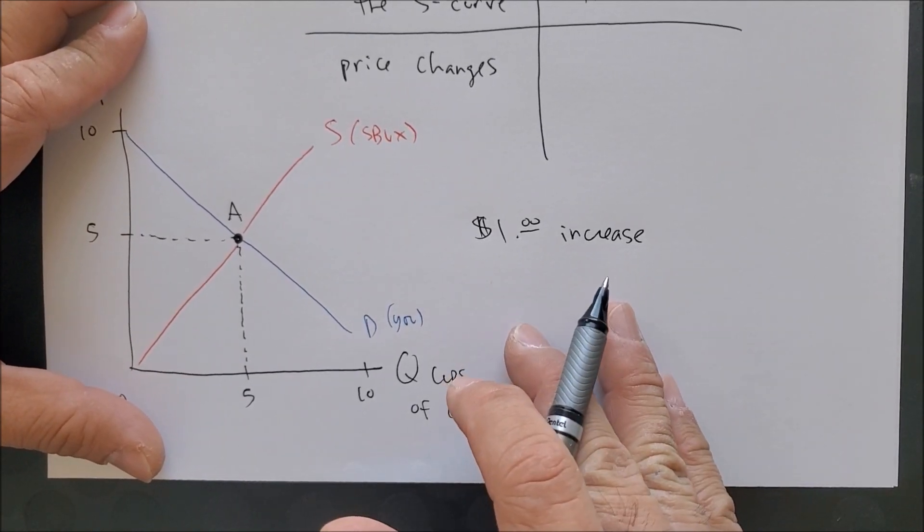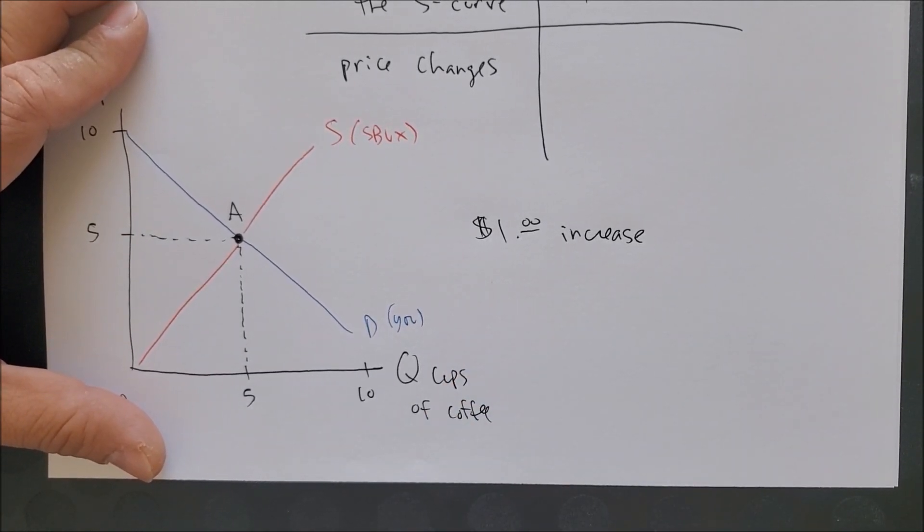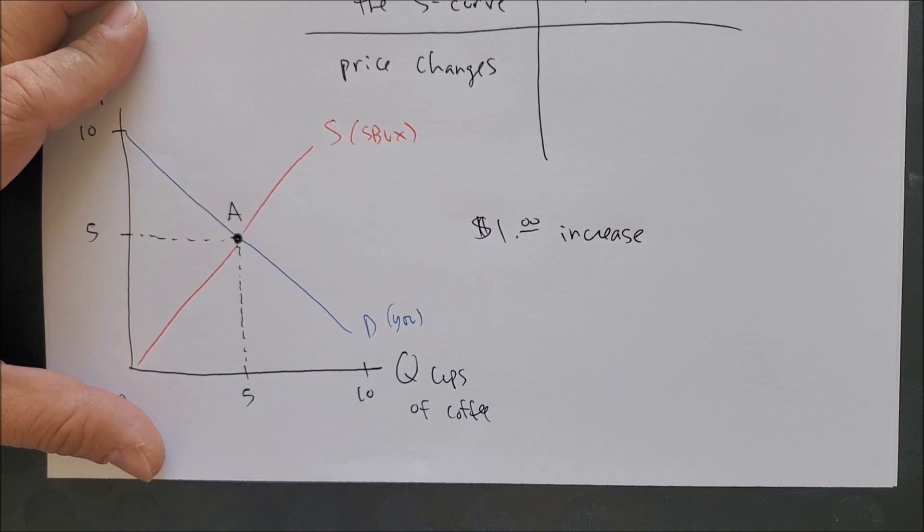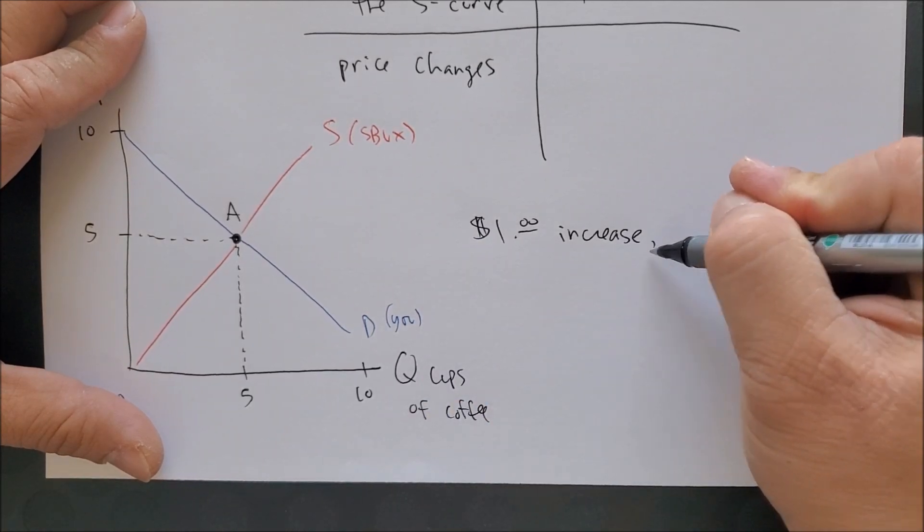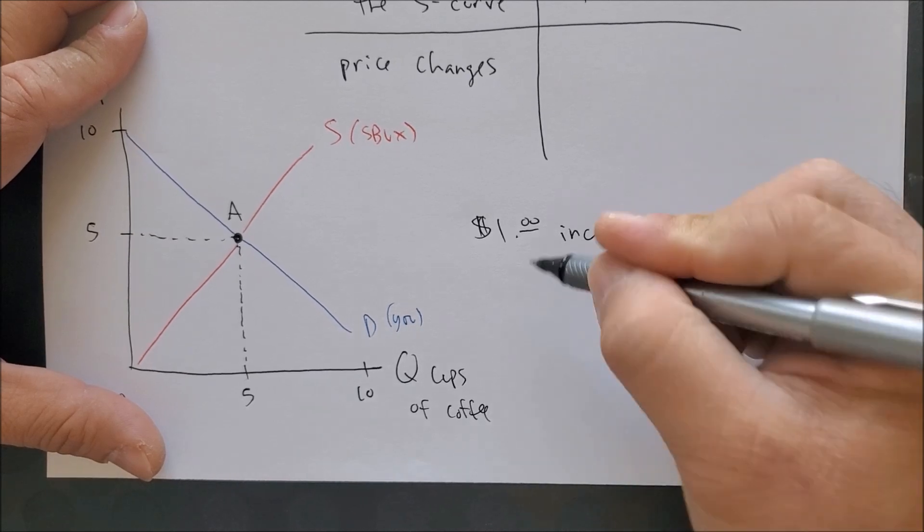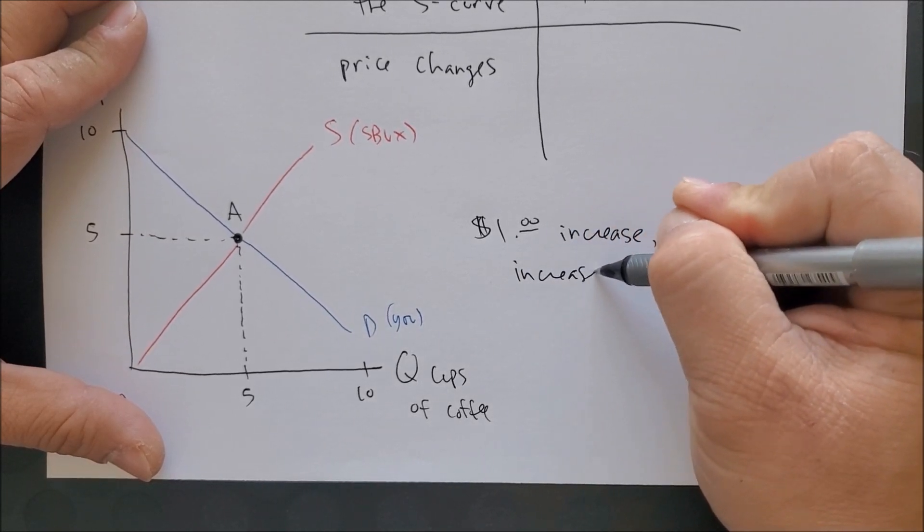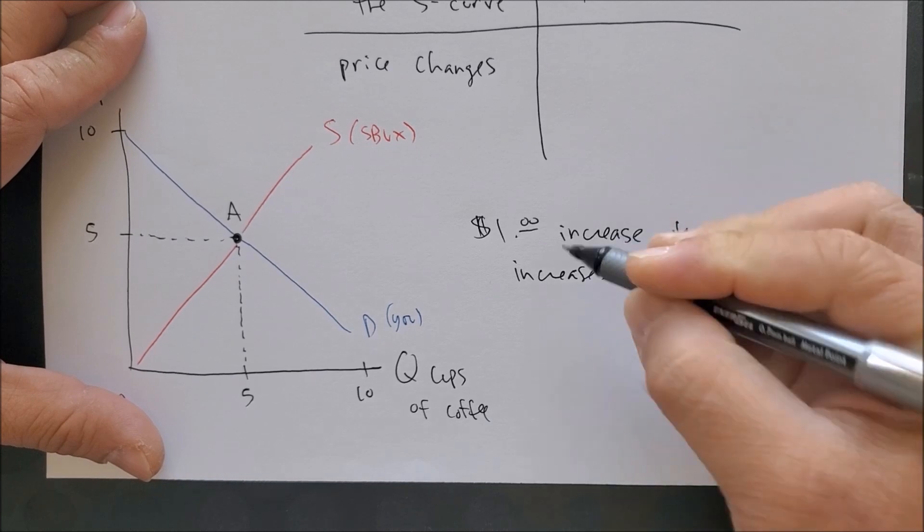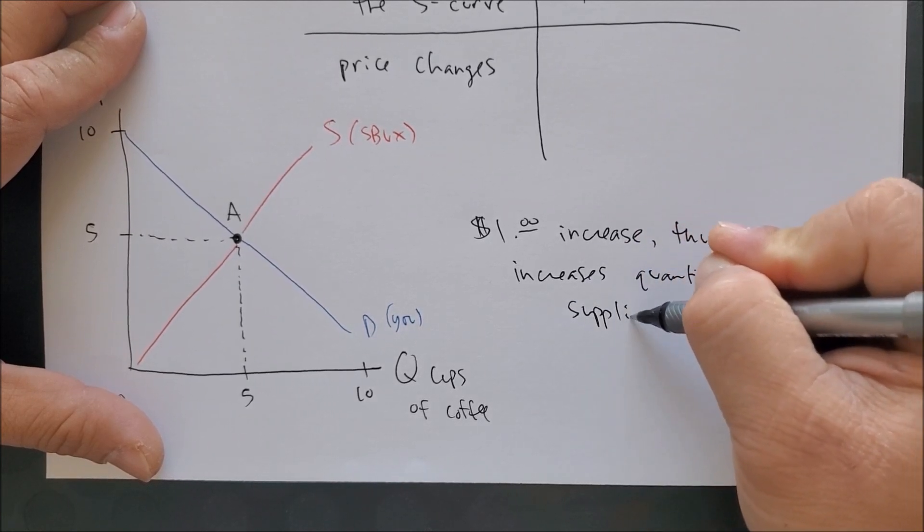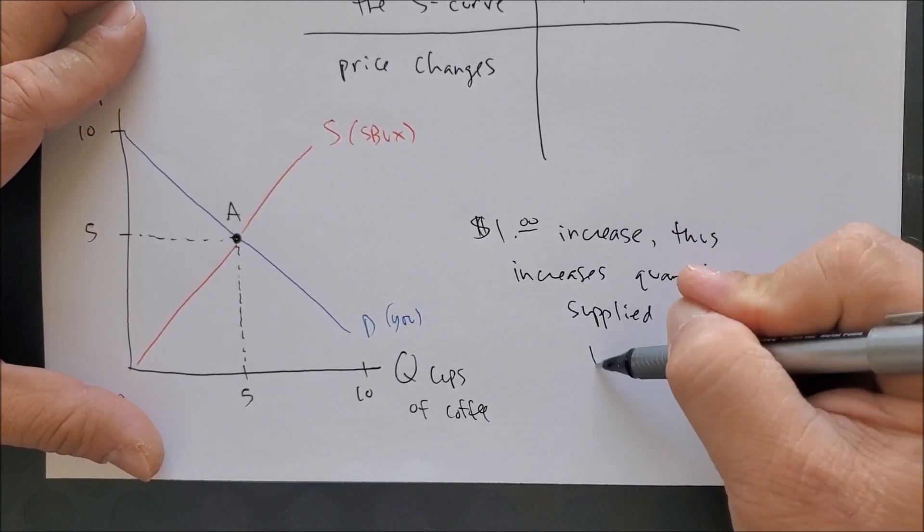So a dollar increase should motivate Starbucks to produce more. A dollar increase thus increases the quantity supplied by one more cup.